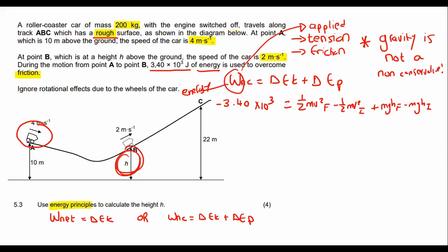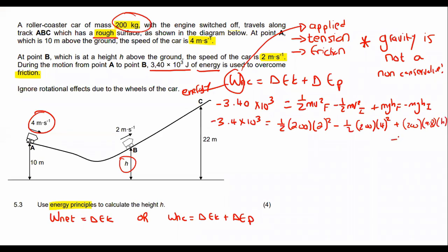Now they would like us to only go up to here, so we're not worrying about this part. We're only going from here up to here. So it's very easy. We can say negative 3.4 times 10³ equals to ½, mass 200 kilograms, final velocity at that point is 2, initial velocity is 4. A lot of students forget about the square—please remember that. And then the final height, we don't know what that is. 200 times 9.8 times h minus 200 times 9.8, the initial height is 10.